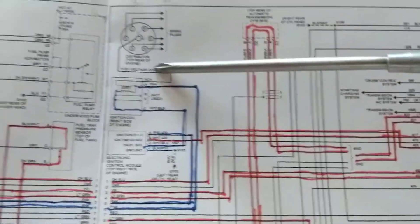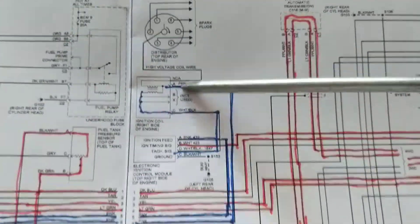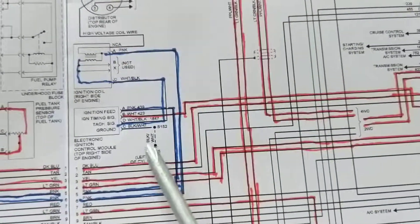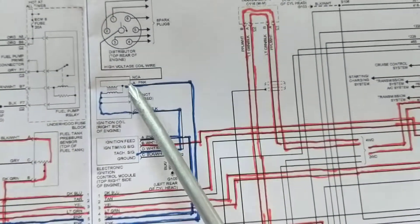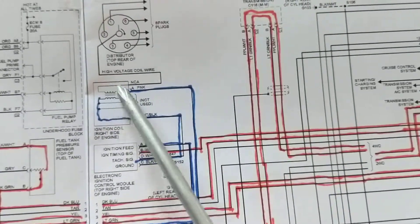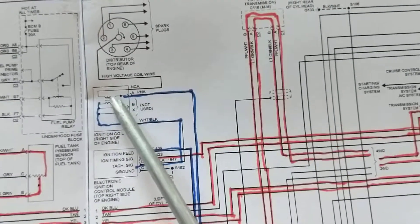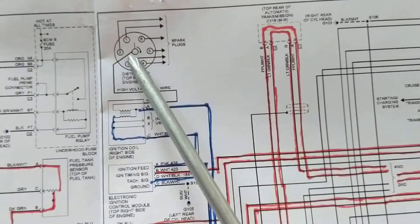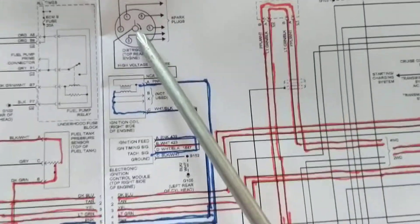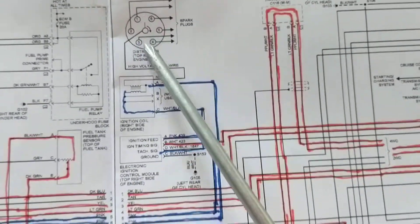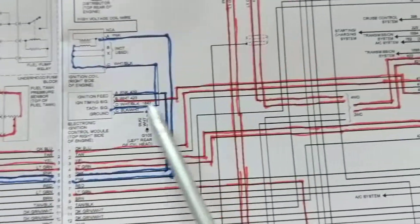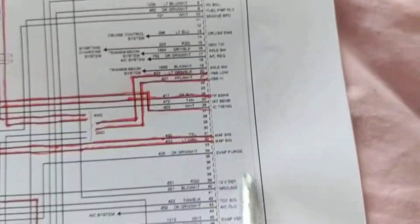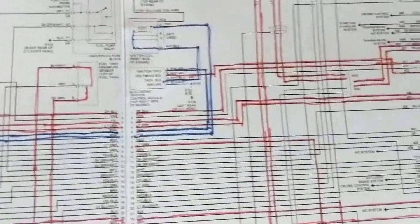If this one ignition coil does not work, we cannot fire spark into the cylinders. Impossible. Therefore, your engine will not turn. This is a major part. Make sure you have B plus - look at the blue lines. This is going to toggle the primary, and when the magnetic field collapses, it induces voltage into this to give you the spark that's needed - 30,000 volts, 40,000 volts, whatever is needed. All this is based on ignition timing from the PCM.